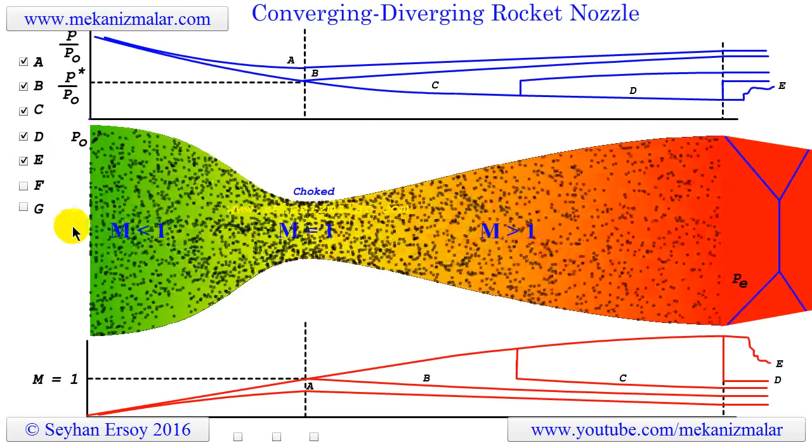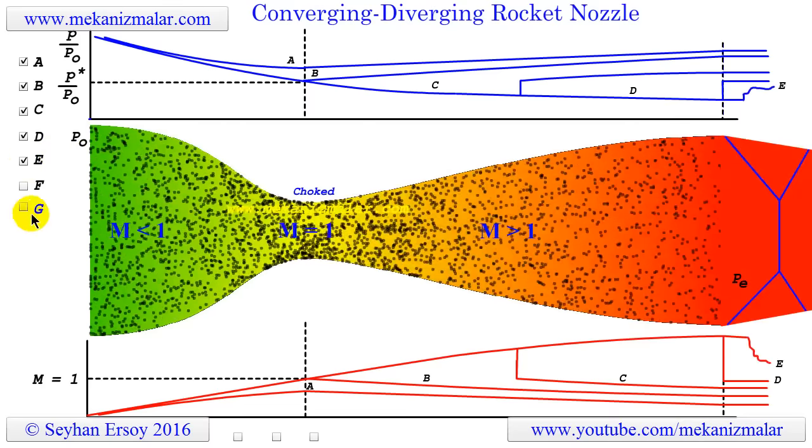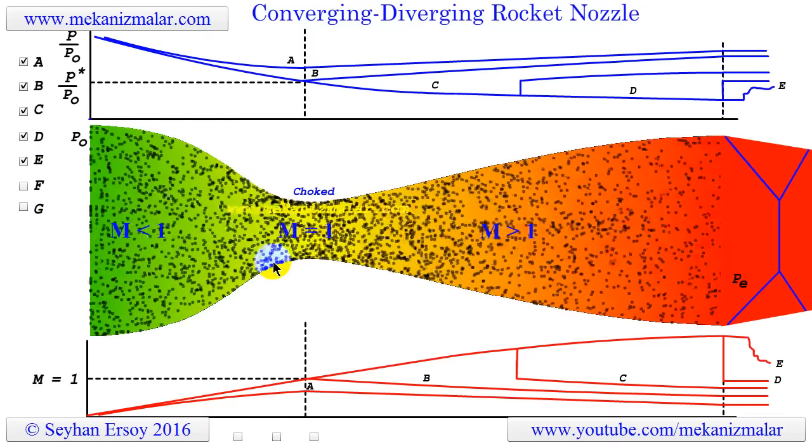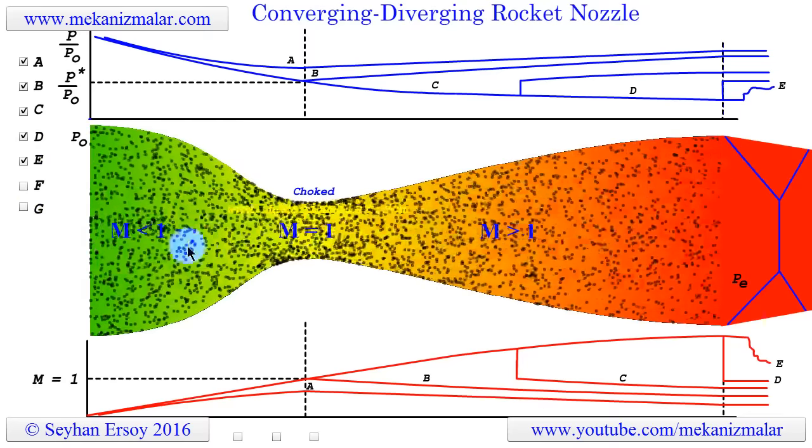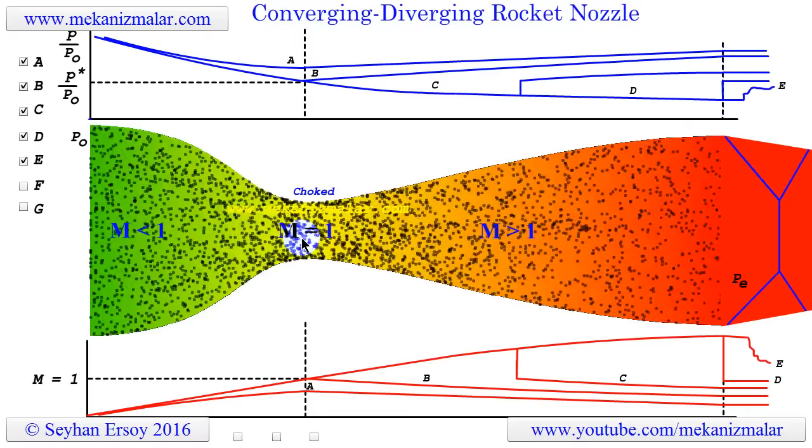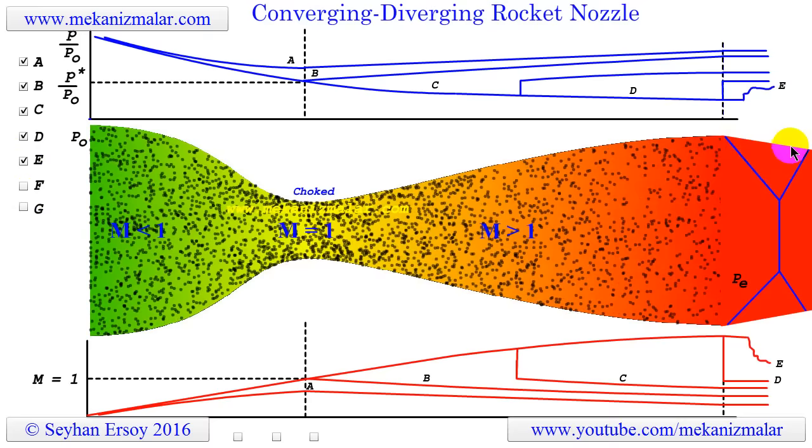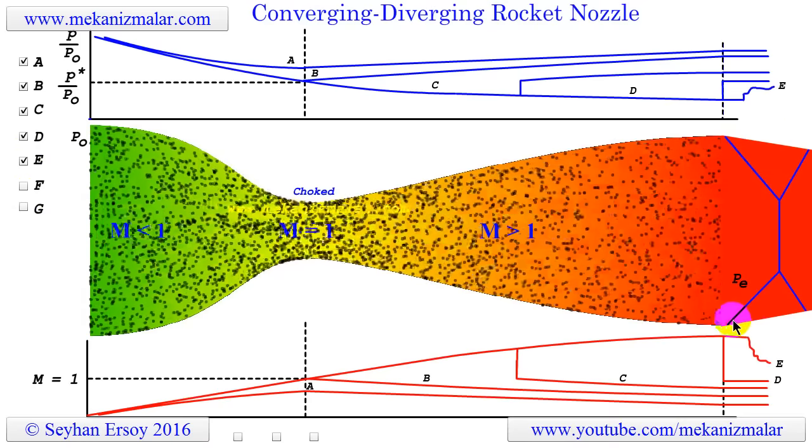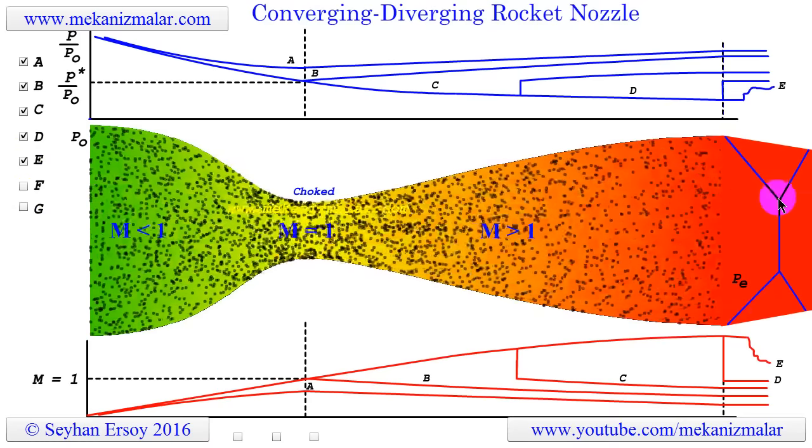As seen in case E, reducing the exit pressure further results in a strange behavior in the gas flow. During this operating condition, the exit pressure of the nozzle is below the ambient pressure. This makes exit flow converge and causes a strange shock wave formation after exiting the nozzle.